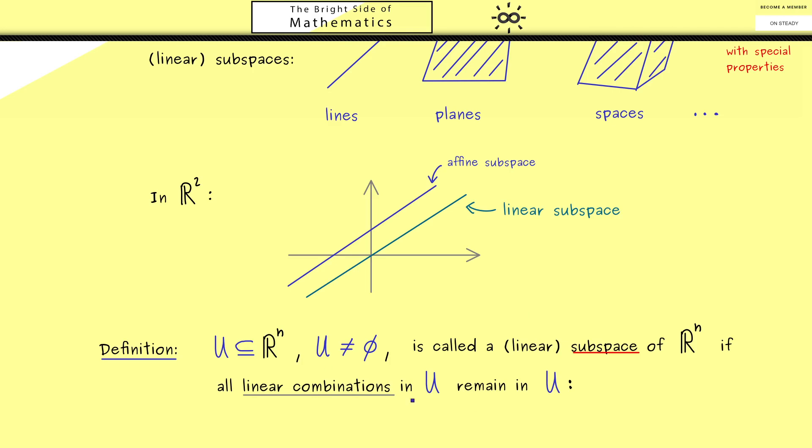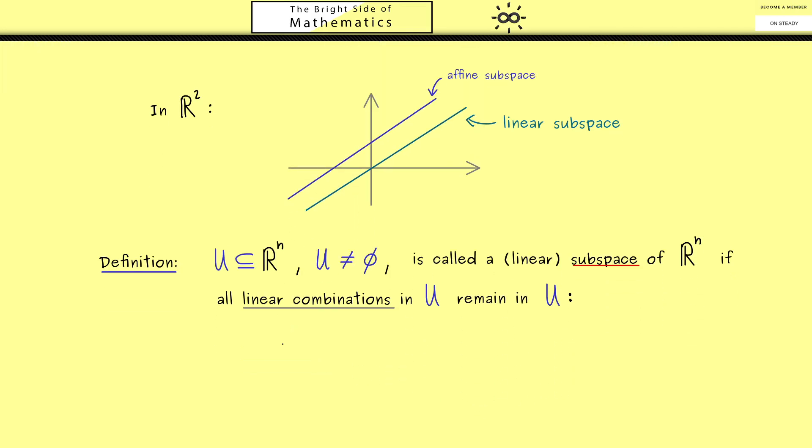And of course we can also put this into a formula. For this please recall part 3 where we have defined a linear combination. So we just take k vectors u1, u2, and so on from the set U, and also k scalars. And then we can form the linear combination, which means we scale the vector uj with λj and then we sum all up. And now the important claim for a subspace is that this linear combination is also an element in U.